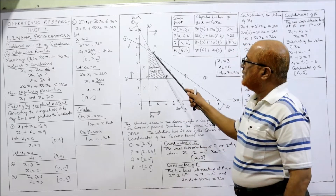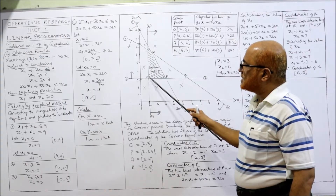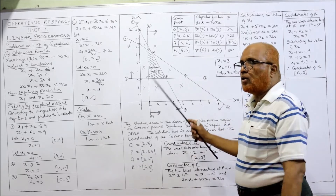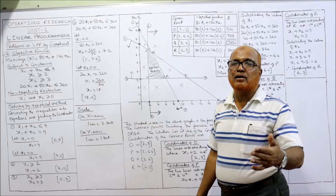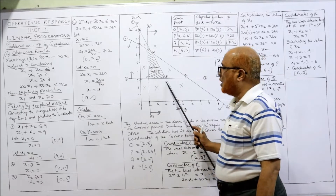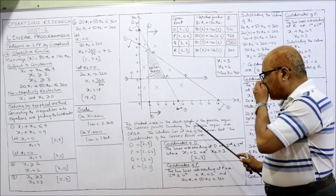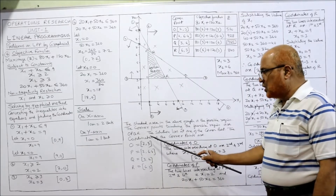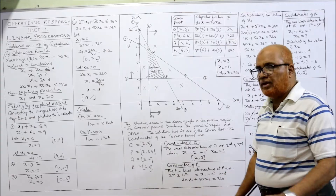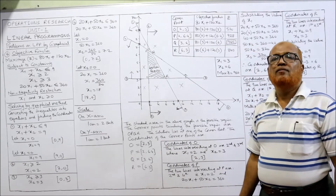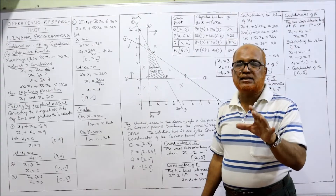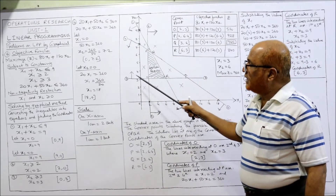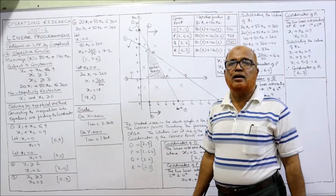We have given the names O, P, Q, R to the corner points touching the feasible region. Our solution lies at one of these corner points. We have to evaluate and find out the coordinates of O, P, Q, R. I have written the line numbers on the graph so that you can easily identify which two lines are intersecting at each corner point.